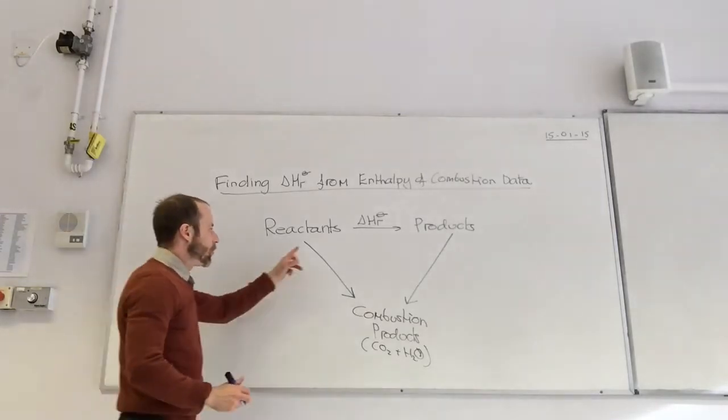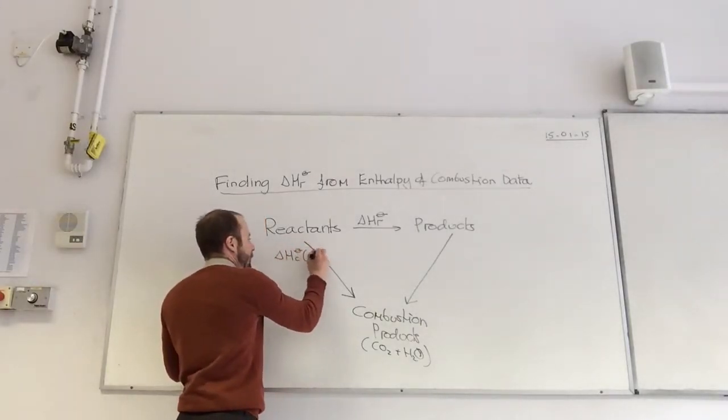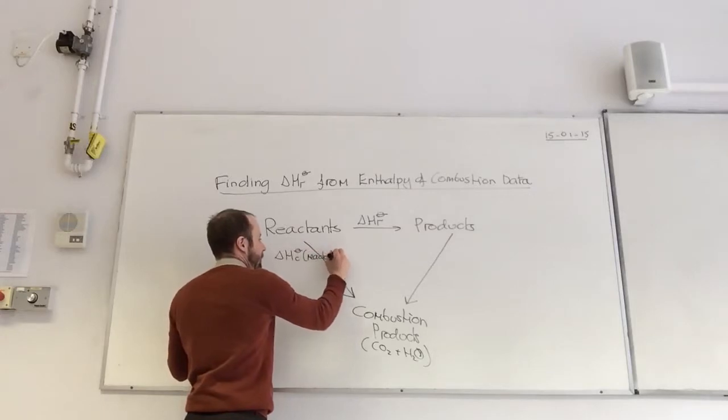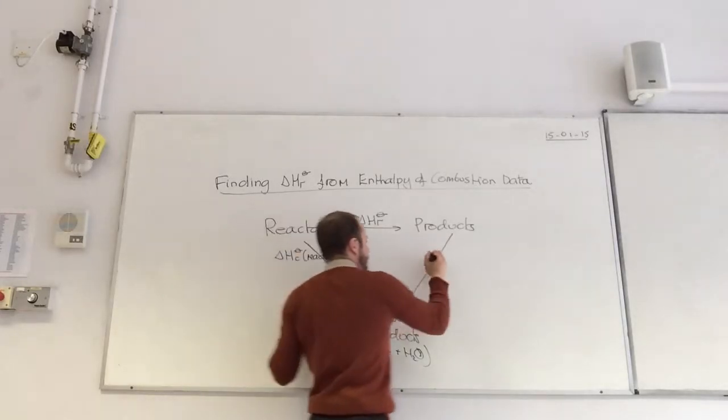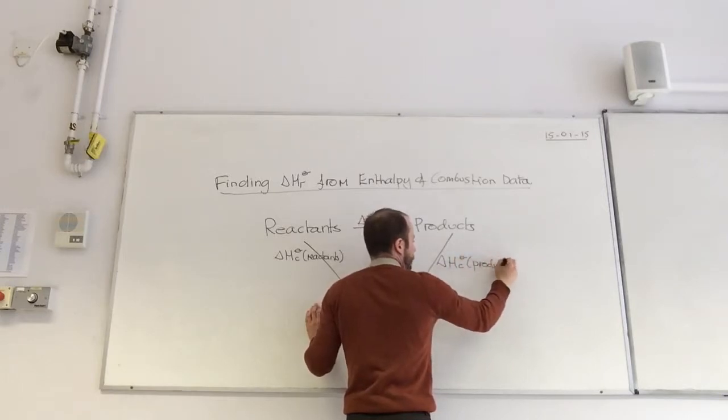On this arrow, there's delta H combustion for reactants. And on this arrow, there's delta H combustion data for products.